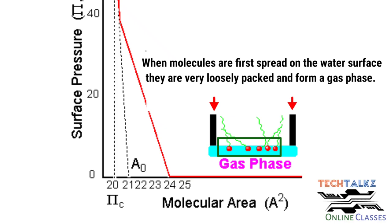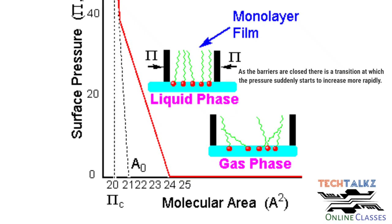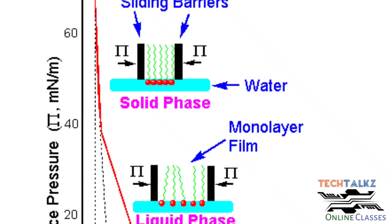When sliding barriers compress the monolayer, the surface pressure increases as the molecular area decreases. The interaction between molecules increases. This transition moves from the gas phase — where molecules have free space — into the liquid phase, as the barriers move closer together.